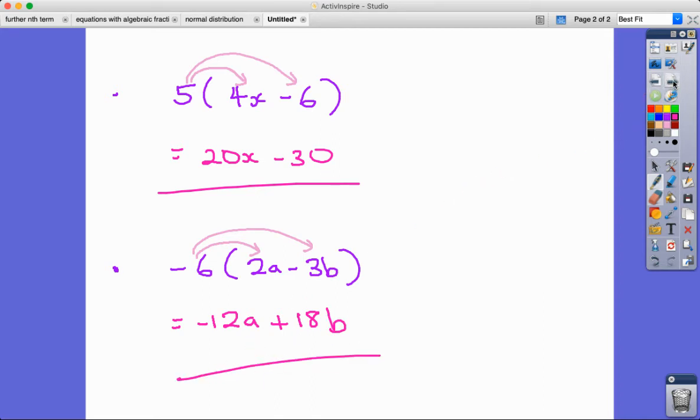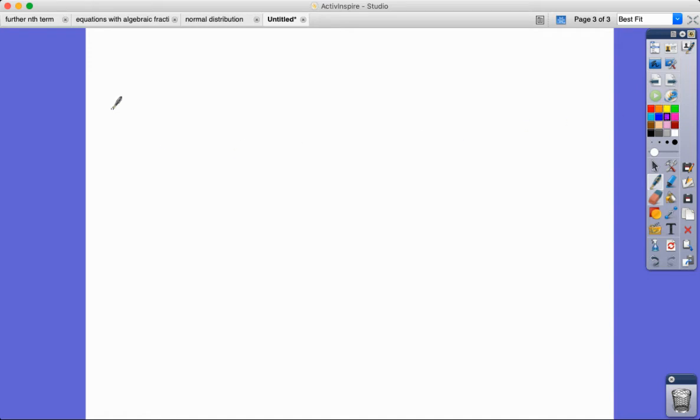Let's try some more. Next one. How about we've got 3x and we've got x minus 6. So again, I'm going to multiply everything in this bracket, both terms, by 3x.